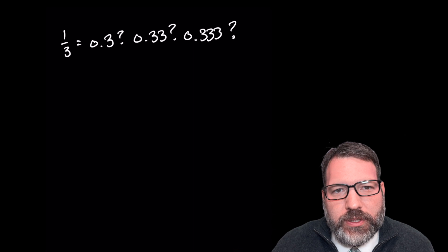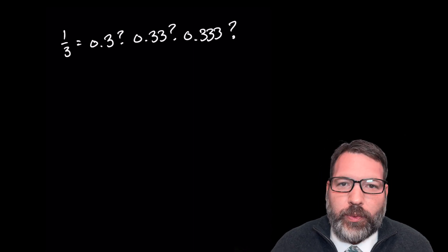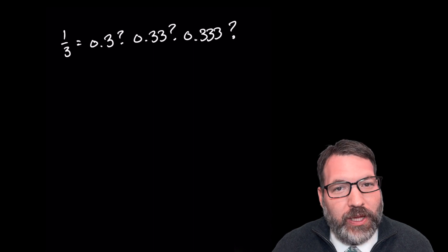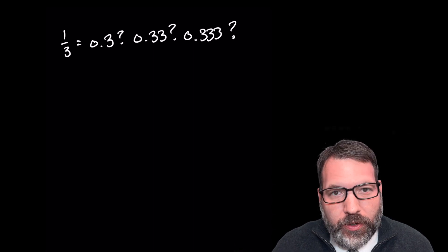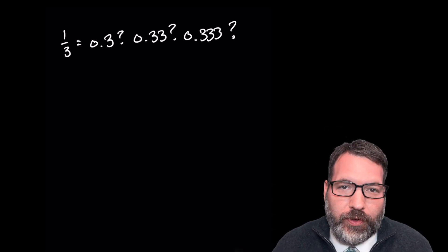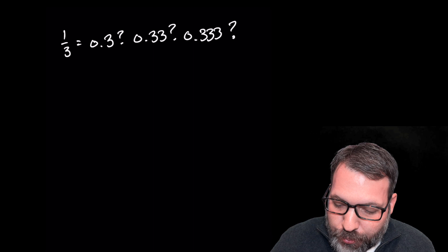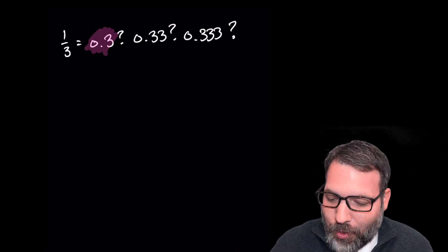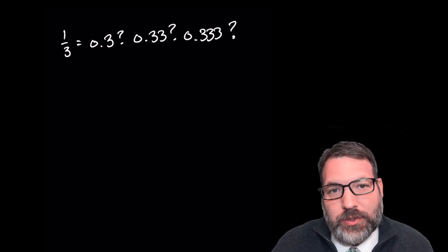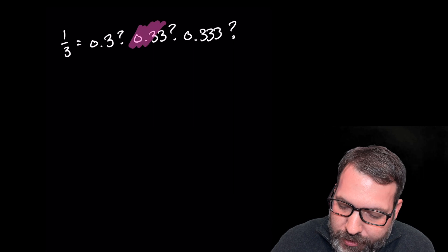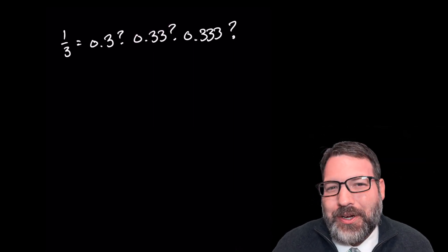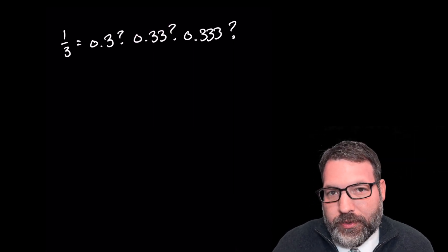It's important to note that if at any point we stop engaging in that process, we will have something that might be really close to one-third, but will not be equal to one-third. One-third is pretty close to three tenths, but it's not quite the same thing as three tenths. One-third is even closer to 33 hundredths, but it's not quite the same thing as 33 hundredths.